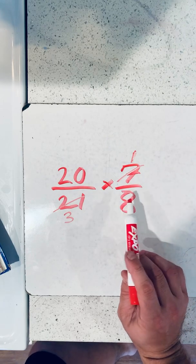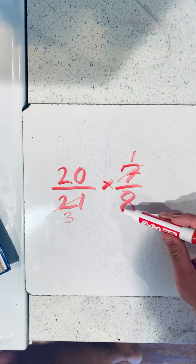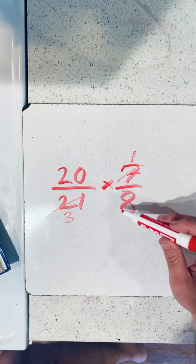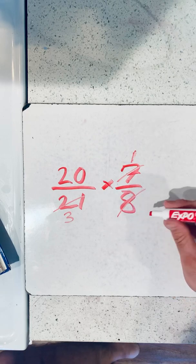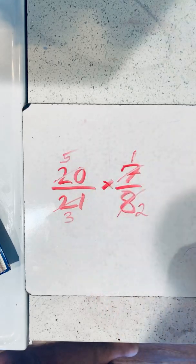Next thing we can do is we could take the 8 and the 20. What we can do here is, 4 is the greatest common factor that they share together. So 4 goes into 8, that becomes a 2. 4 goes into 20, then it becomes a 5.